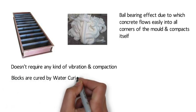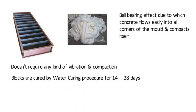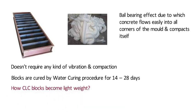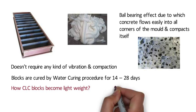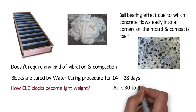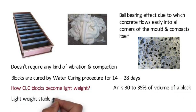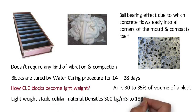Blocks are cured by water curing procedure for 14 to 28 days. The question is, how do CLC blocks become lightweight? The answer is CLC blocks consist of a lot of pores, and these pores contain nothing but air, which is 30-35% of the volume of a block. This results in a lightweight stable cellular material with densities ranging from 300 kg per m3 to 1800 kg per m3.